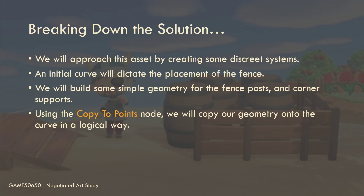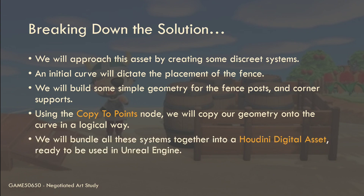Once we've got the geometry and the curve, we're going to use a node called 'Copy to Points,' which will copy those fence posts onto the curve. It's a little more complicated than that, because there are certain attributes we need to be aware of before it copies in a logical way. The Copy to Points node is one of the coolest nodes in Houdini — it can do an awful lot. It's one of the cornerstone nodes in Houdini surface operators. Then, once our system is up and running, we'll bundle it all up into a digital asset that can be imported into Unreal Engine.